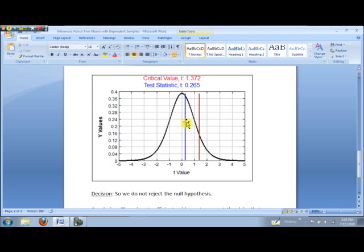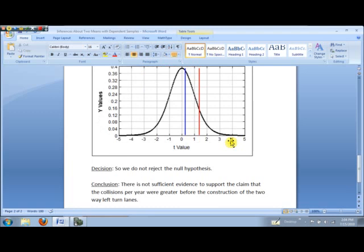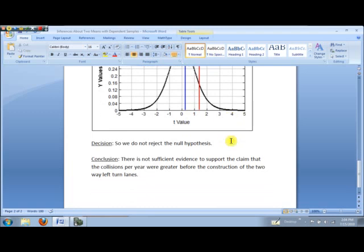Alright, blue line represents the test statistic, red line is the border for the critical region on the right tail. So we do not reject the null hypothesis. The claim was the alternative hypothesis. So our conclusion here is that there is not sufficient evidence to support the claim that the collisions per year were greater before construction of the two-way left turn lanes.